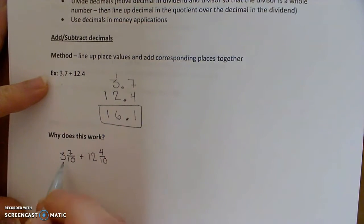You can really just add the whole number parts together. 3 plus 12 to get your new whole number part. And then add to that the fraction part, which is 7 tenths plus 4 tenths.